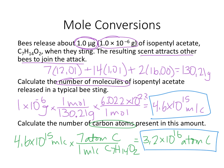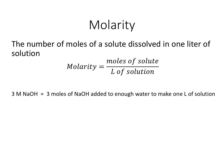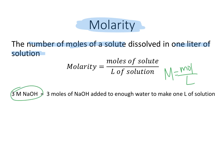Now we're going to talk about molarity. Molarity is a unit of concentration for solutions, defined as the number of moles of a solute dissolved in one liter of a solution — the total solution, not just the solvent. So molarity equals moles of solute per total liters of solution. For example, a 3M NaOH solution means 3 moles of NaOH in one total liter of solution.